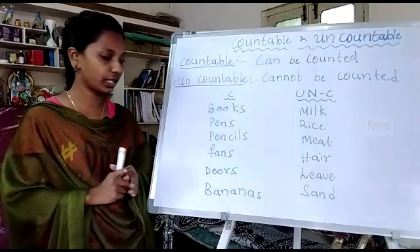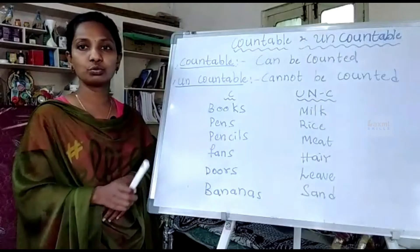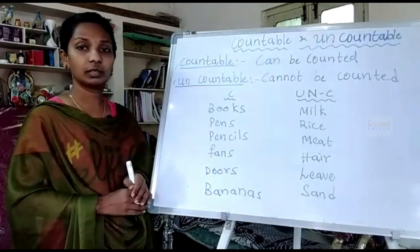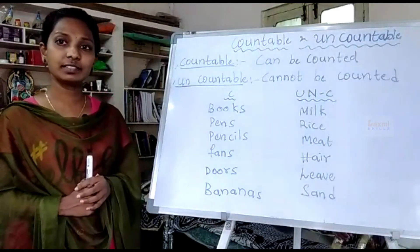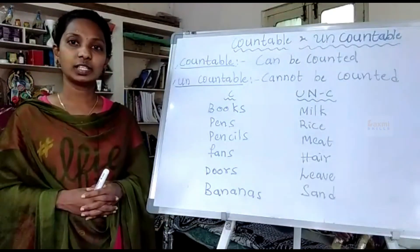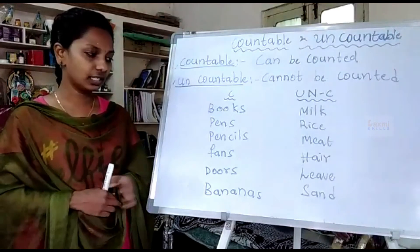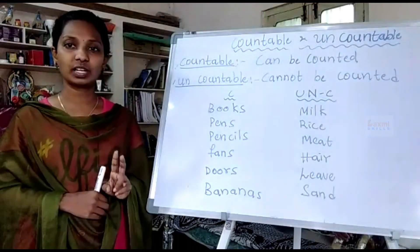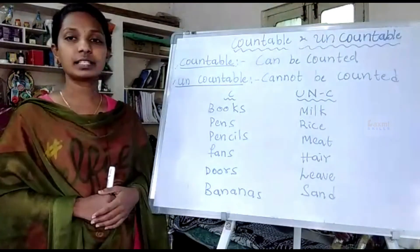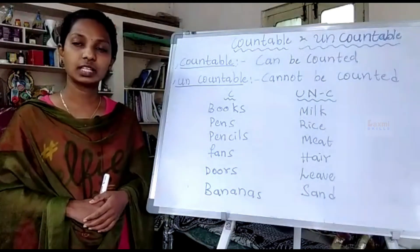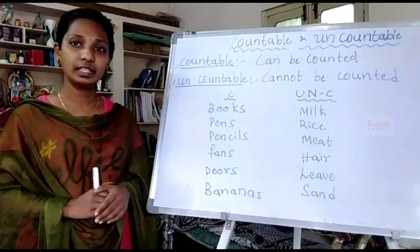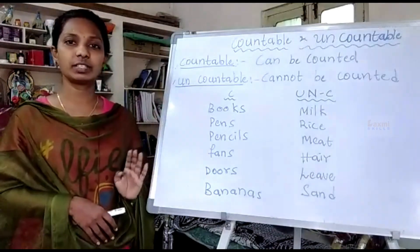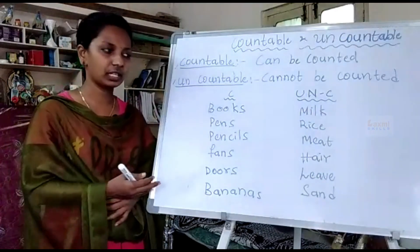Doors are countable — two doors, three doors. For uncountable, leaves: some people have an enormous number of leaves, so these come under uncountable things. Bananas are countable — one dozen, two dozens. Sand is uncountable — sand is only counted as one kg, two kg, or one bag of sand. These are the differences between countable and uncountable nouns.